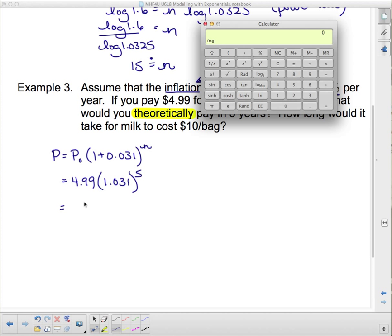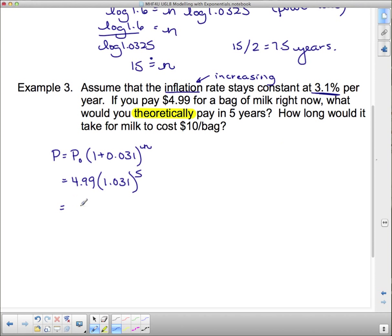Now if you type that in, it's best to put this part in first, works on all the calculators: 1.031 to the exponent 5, and I'm going to hit equals and that is how many times bigger it's going to be. So I'm going to multiply that by 4.99. So $5.81 is what we can expect it to be in five years time.